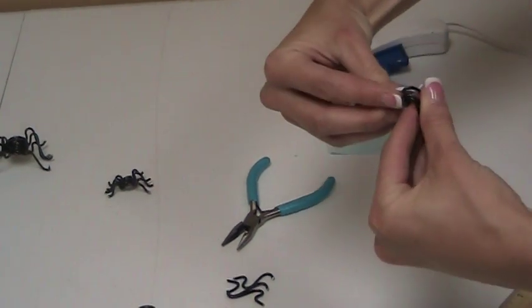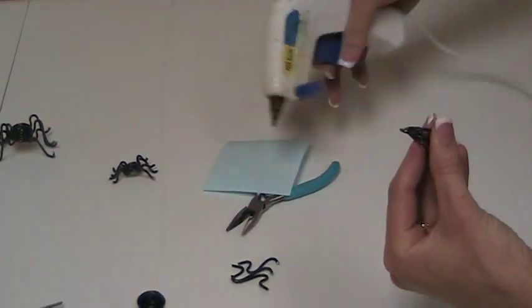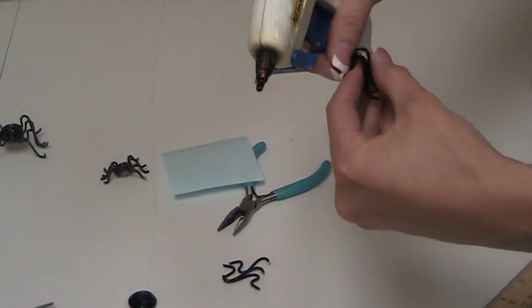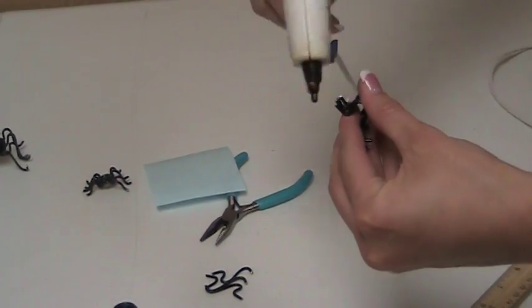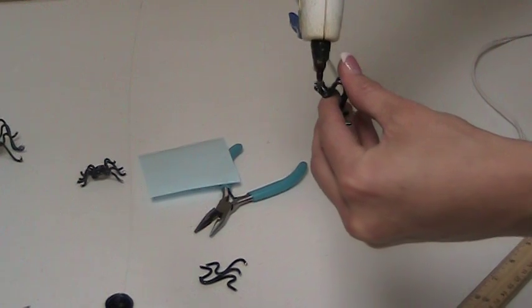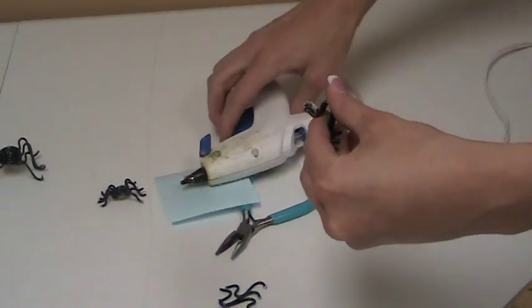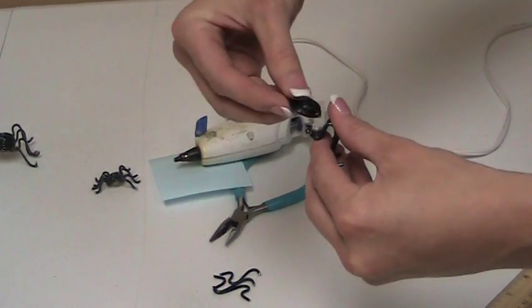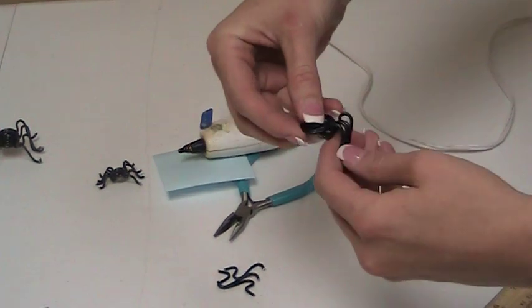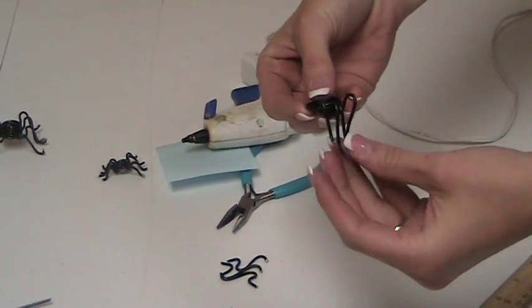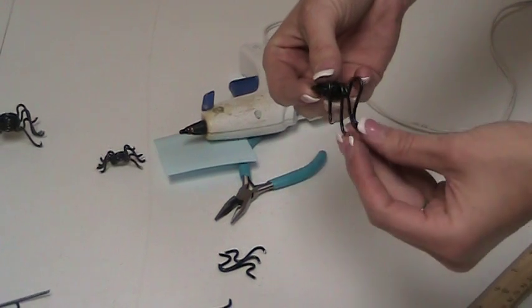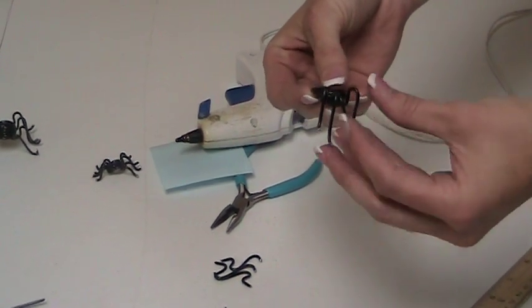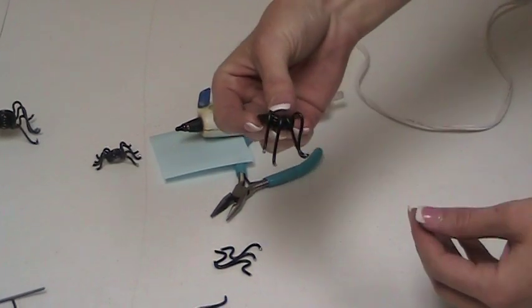Take your glue stick and on the side that has all of the short ends, put a nice pile of glue and then stick it under your spider. You can hurry before it dries and adjust them just a little bit. Hold it there while it sets.